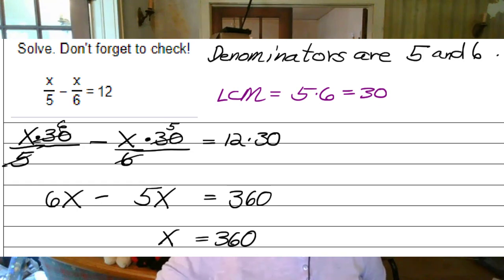Our denominators are 5 and 6. That is 5 times 6, which is 30. So I will multiply every term by 30. For the fractions, I'll put the 30 up in the numerator. But 12 is not a fraction here, so I'll just multiply it by 30. So I'll have x times 30 over 5 minus x times 30 over 6 equals 12 times 30.